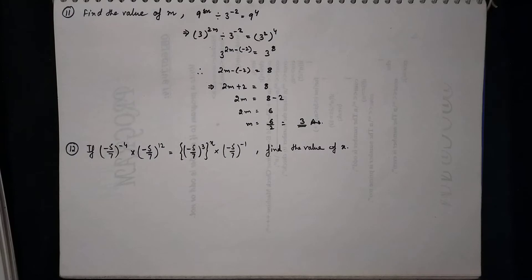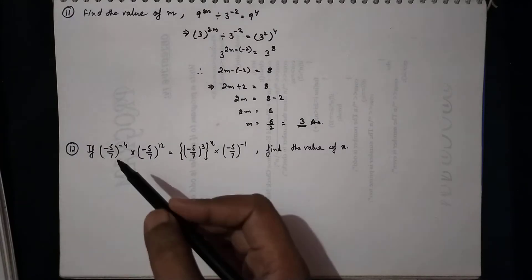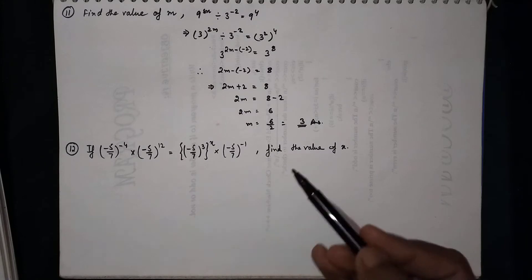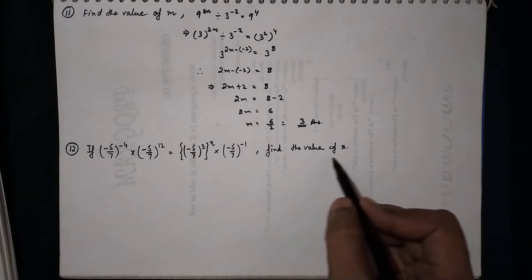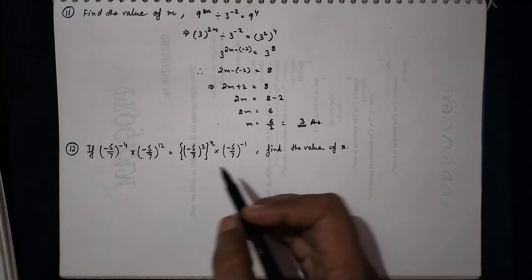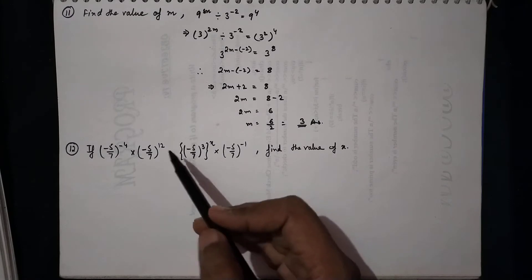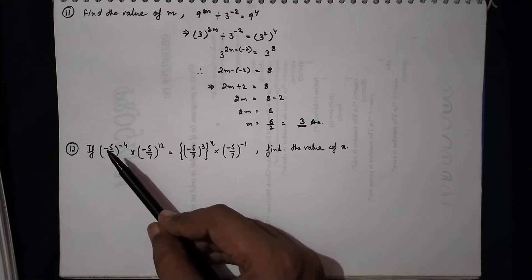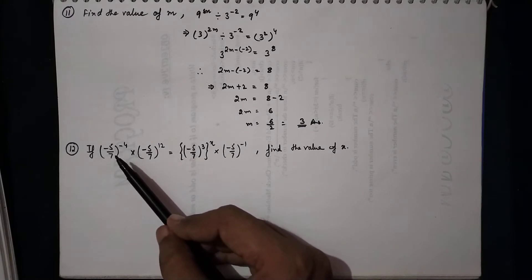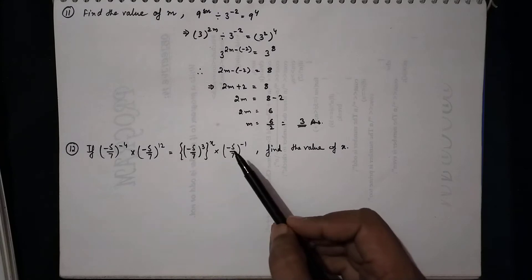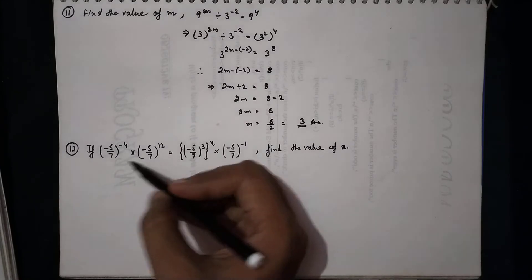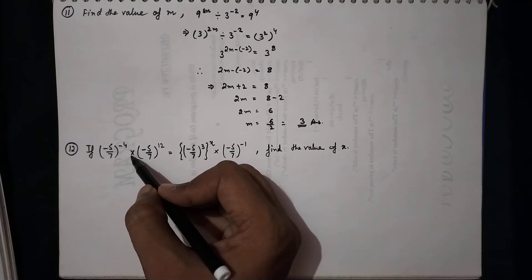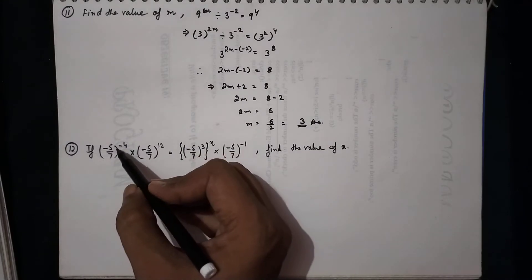Now let's look at question 12. We have to find the value of x in a given expression. We notice that all terms have the same base, which is (−5/7). Since we have a multiplication sign, the powers will be added.